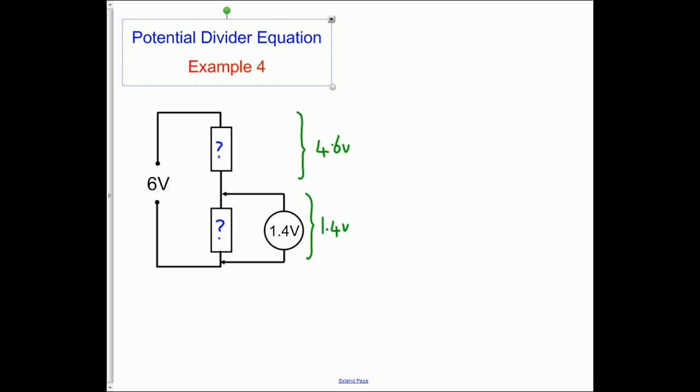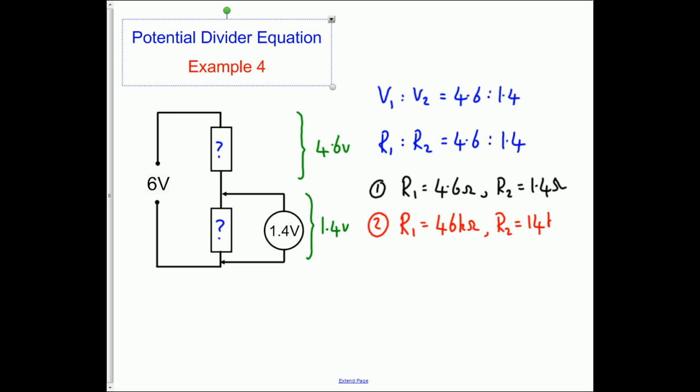And therefore our resistors must be in the same ratio. So the voltages V1 to V2 is 4.6 to 1.4. The easiest thing to say is R1 to R2 has got to be ratio 4.6 to 1.4. So we could use R1 is 4.6 ohms and R2 is 1.4 ohms, but that would be very silly because they're really small values. We could say R1 is 46 kilo ohms and we could say R2 is 14 kilo ohms. That would work.